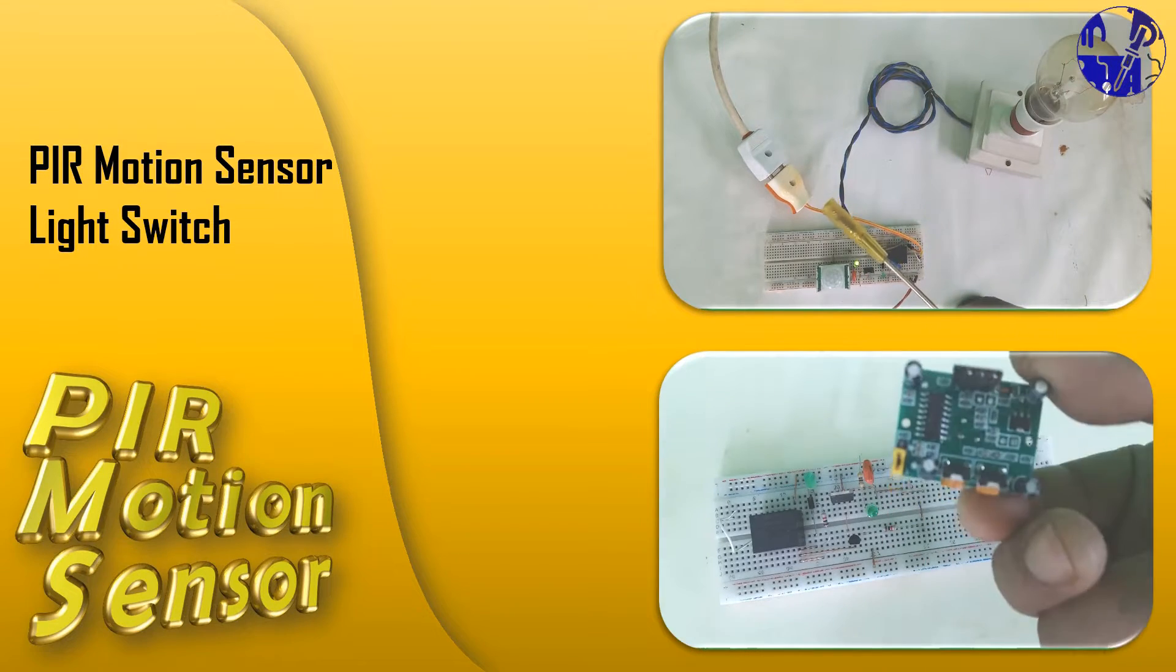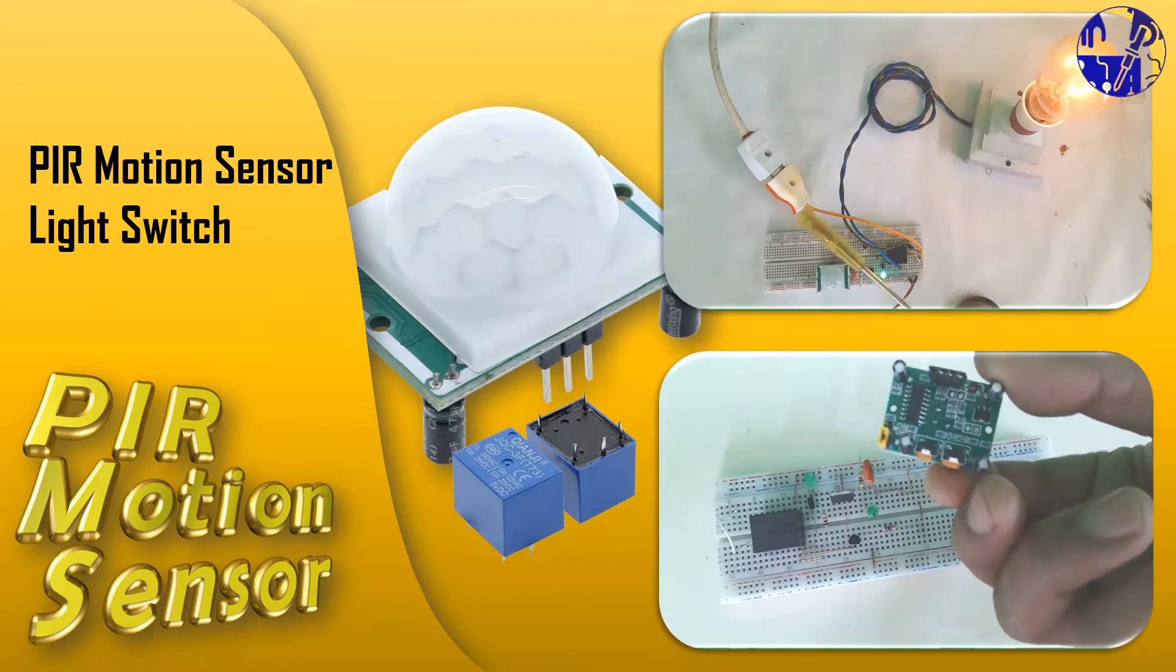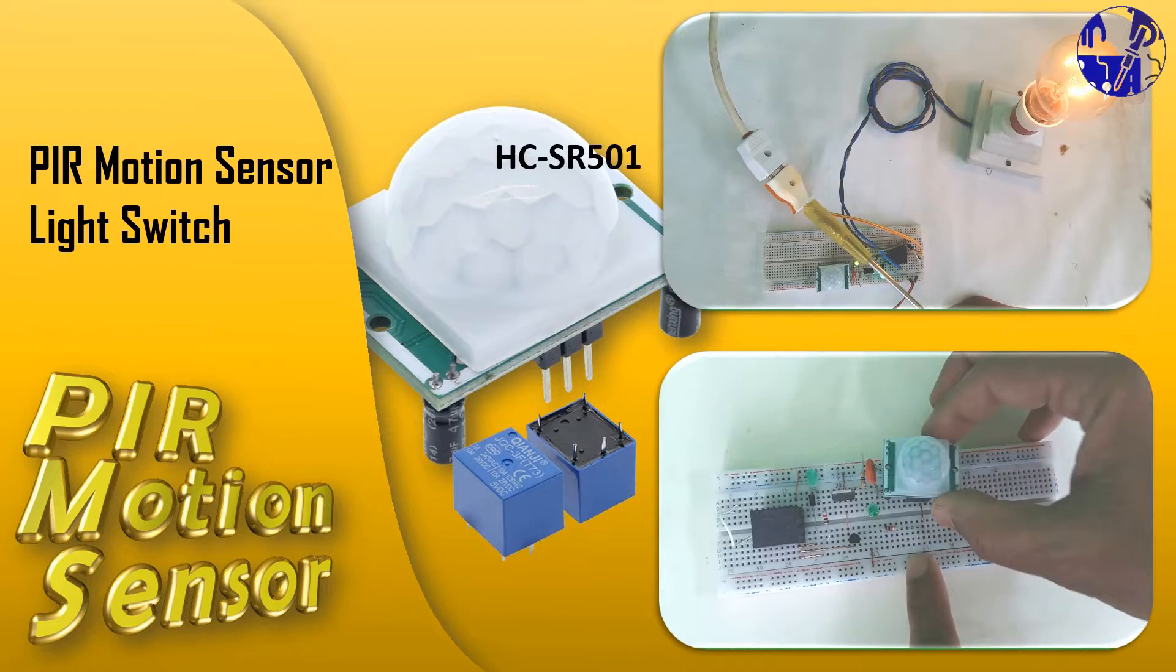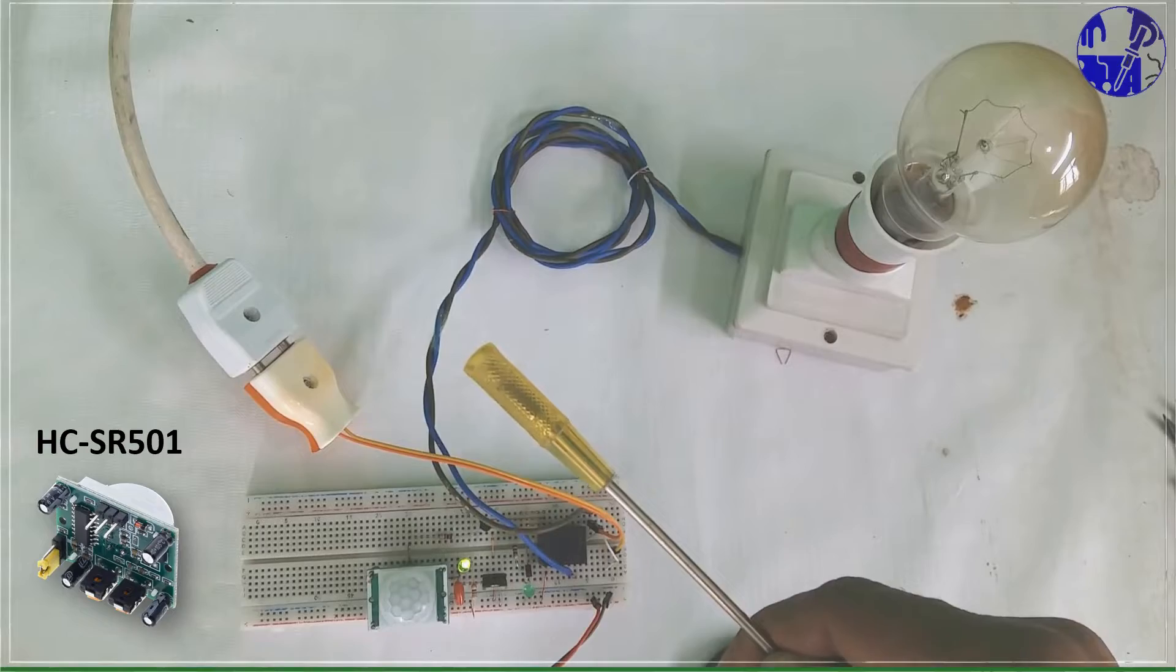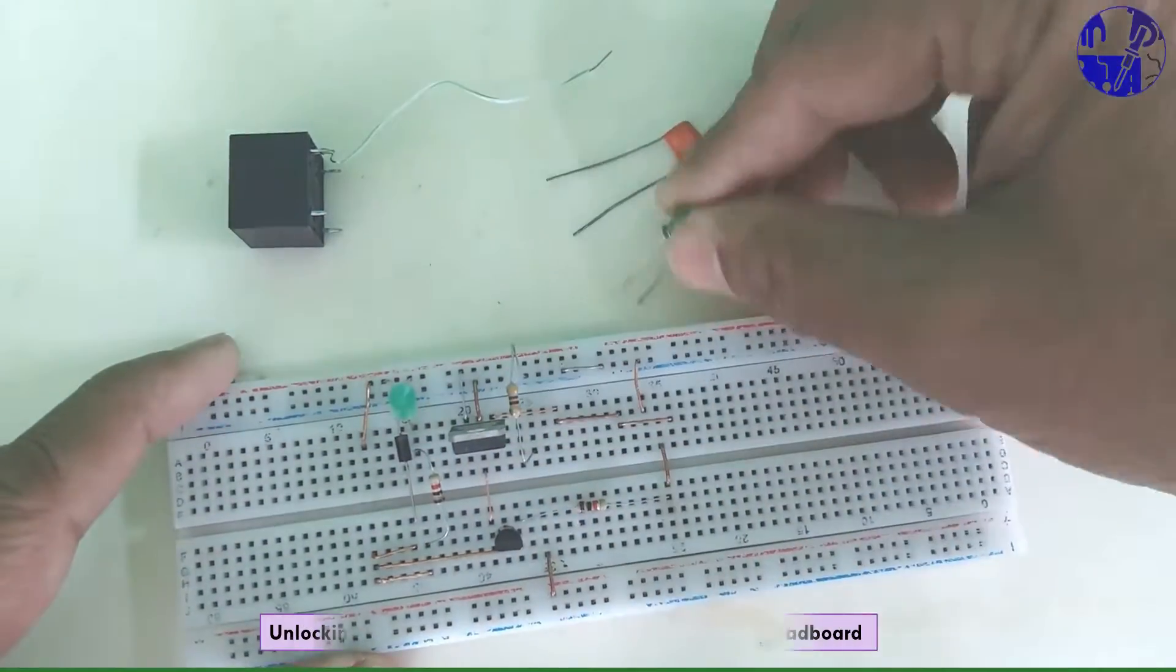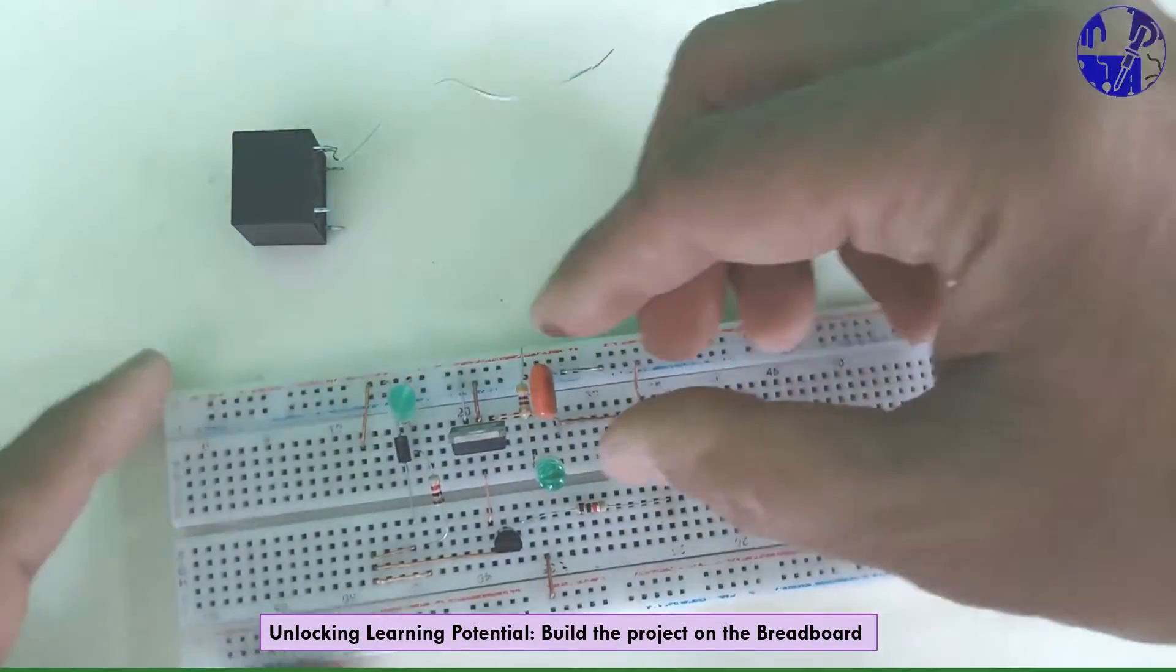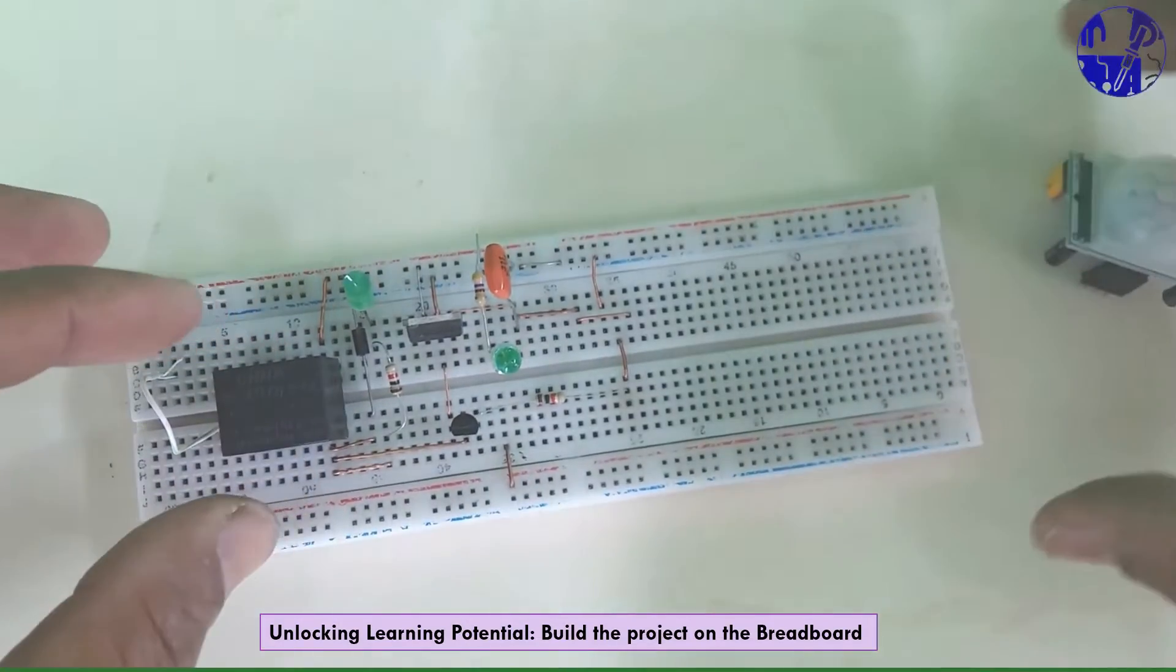Transform your living spaces with our DIY PIR motion sensor projects using HCSR501. Enjoy energy efficiency, enhanced security, and adaptive automation effortlessly.